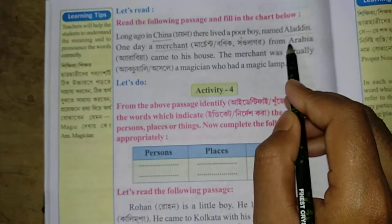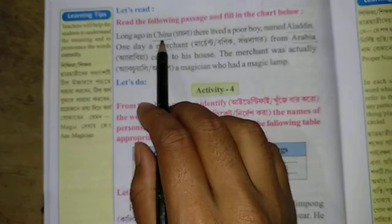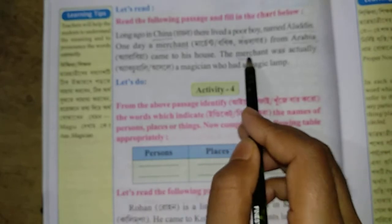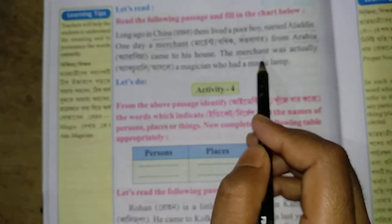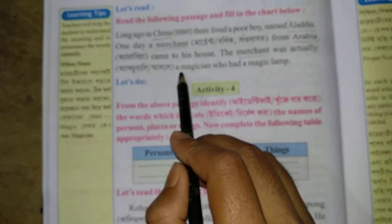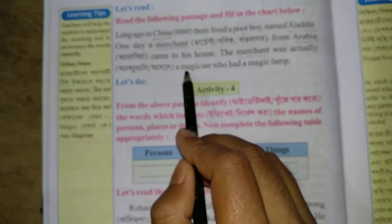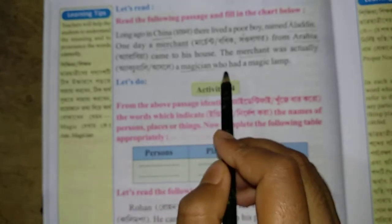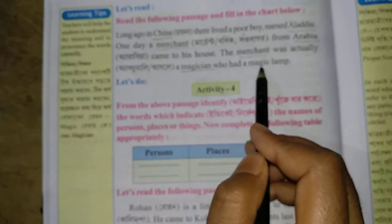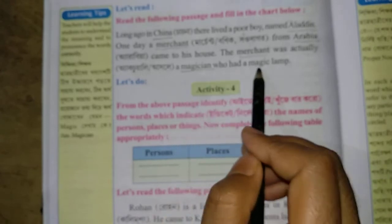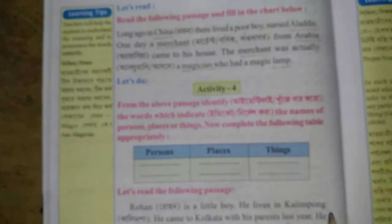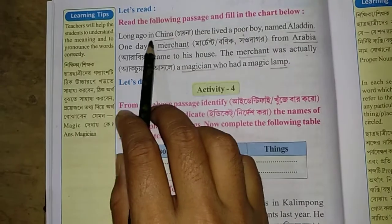Arabia is also a country name. One day a merchant — a merchant is a person who deals with business — came to his house from Arabia. The merchant was actually a magician. A magician is a person who does magic, who had a magic lamp.